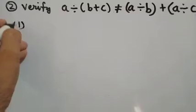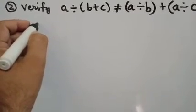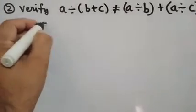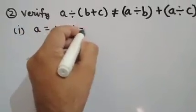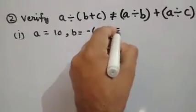Part number 1, if A is equal to 10, B is equal to minus 6 and C is equal to 4.